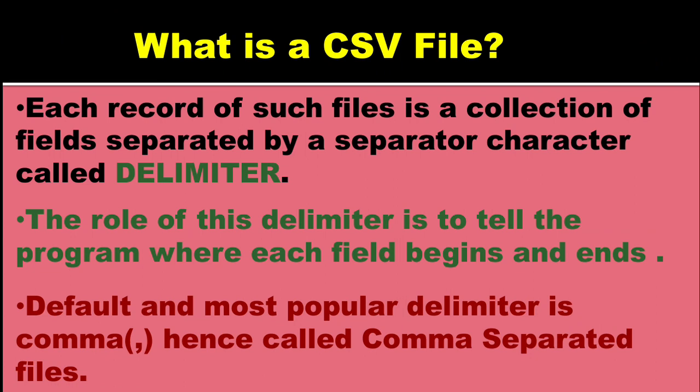The role of this delimiter is to tell the program where each field of the line begins and ends. Between one delimiter character and the next, you have the value for one cell; the data that comes until you find the next delimiter character goes into the second cell, and so on. If you imagine CSV files to be Excel files, it will be easy to understand the way CSV files store data.